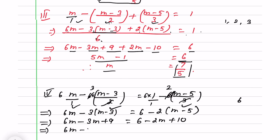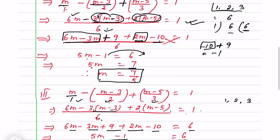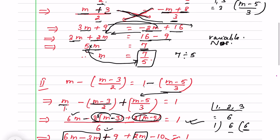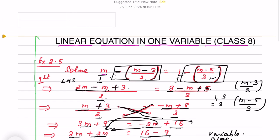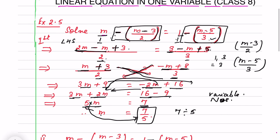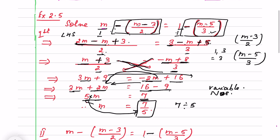Now all variables go to the left-hand side and all numbers to the right-hand side. Bringing minus 2m to the left gives plus 2m; 6 plus 10 minus 9 again gives 5m equals 7, and the answer is m equals 7 by 5. So any method you can use — it depends on which method you are comfortable with. I hope you have understood. Thank you.